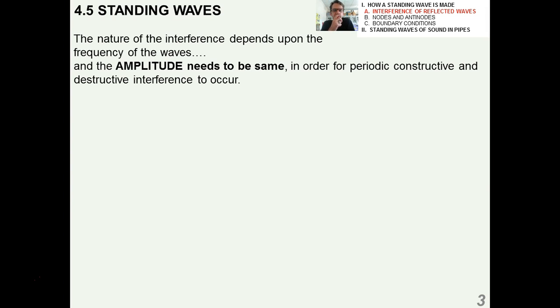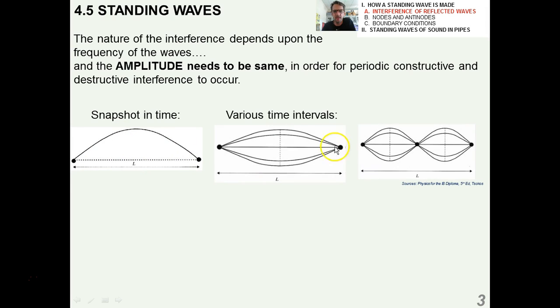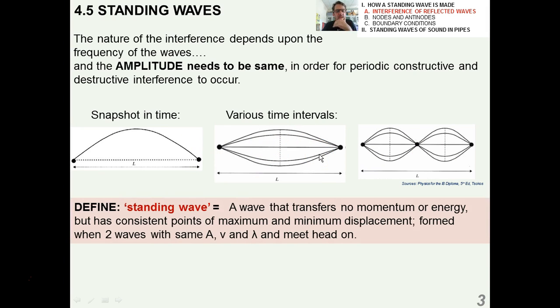If many waves travel down the rope in succession at a constant frequency—in other words, a wave train—then the original and reflected waves will interfere according to the principle of superposition in a predictable fashion. They appear to not be moving, but of course they are just through one another, and these are called standing waves. Your definition of a standing wave is formally a wave that transfers no momentum or energy, but has consistent points of maximum and minimum displacement. It's formed when two waves with the same amplitude, velocity, and wavelength, and hence frequency, meet head-on. It's not to say that there's no energy traveling through the medium—there's lots of energy, but it doesn't transfer energy from one place to another. Basically, in the case of the beads, they just go up and down.